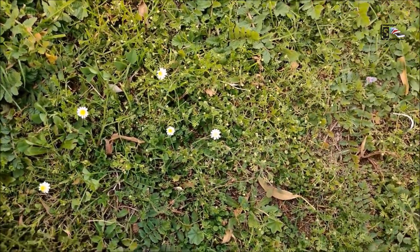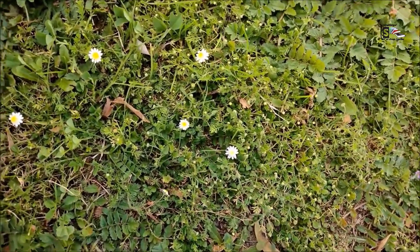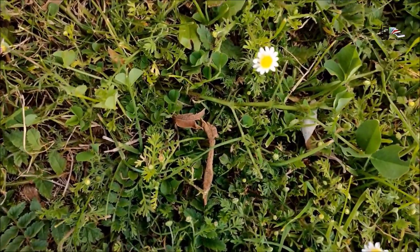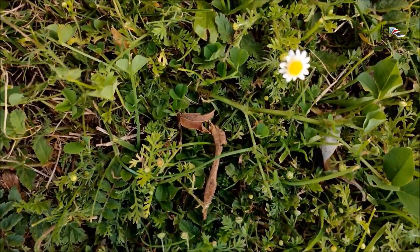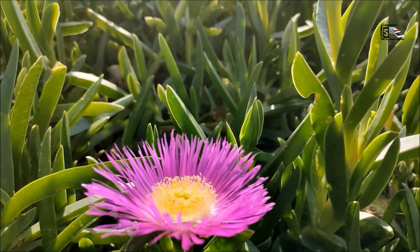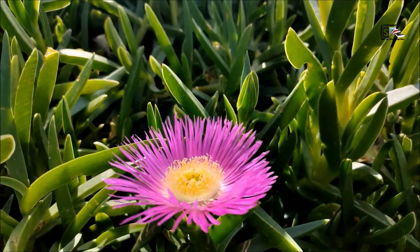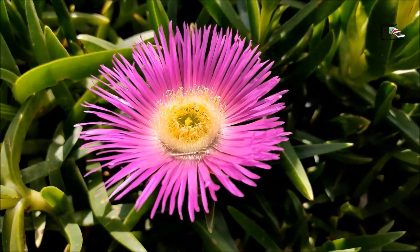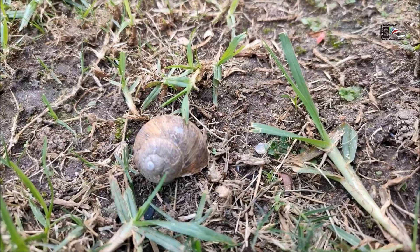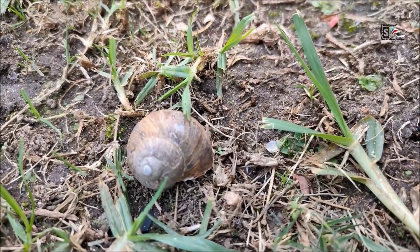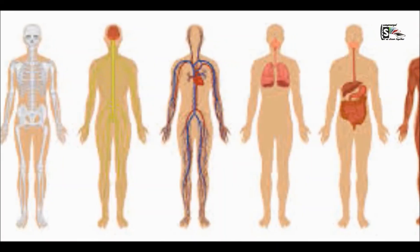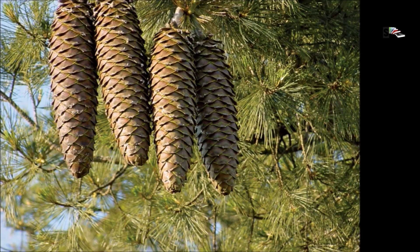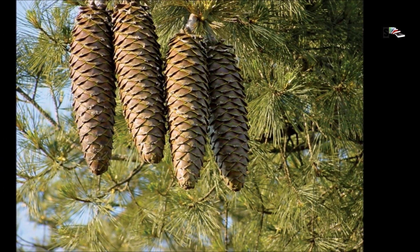Looking at a flower makes you think there's nothing special about it, but if you look closely at the arrangement of the petals, you might start to discover a strange sequence. It is not only in the flowers — look at the snail's spiral-shaped shell, look at your own body, and look at a pine cone.